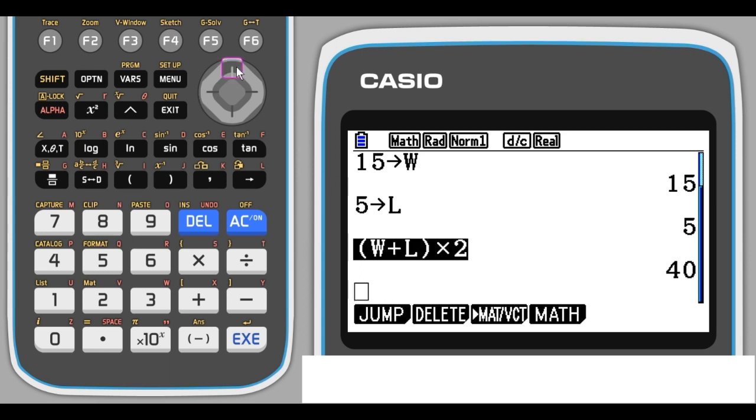And let's scroll back up to where we put 5 in as the length. Use the cursor button, delete the 5, and type in 23 as our length. Press EXE.